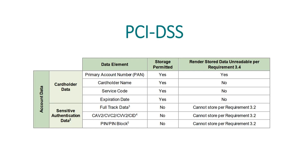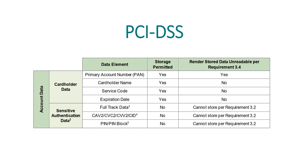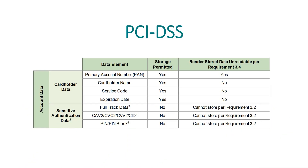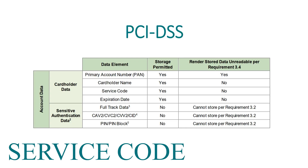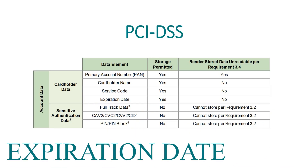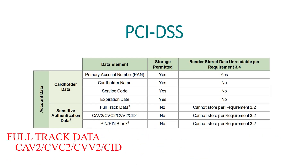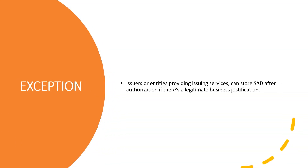Let's begin with PAN or primary account number: can we store the PAN? Yes. Do we need to render PAN unreadable? Yes. Can we store cardholder name? Yes. Do we need to render cardholder name unreadable? No. Can we store the expiration date? Yes. Do we need to render it unreadable? No. On the other hand, sensitive authentication data — full track data, CVV code values, CVV, PIN blocks, PINs — we cannot store sensitive authentication data.